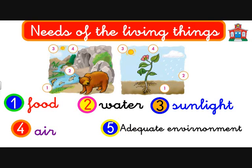And the last one is an adequate environment. What does it mean? It means like the bear needs a place to live — a nice place to live where it can find fish, water, and sun. Imagine we put the bear into a desert, or this plant into a desert. Can the plant or the bear live in a desert? No, because there is no water and no food for them. Some penguins live in a very, very cold environment. So an adequate environment means finding the right place for an animal to live or for a plant to grow.